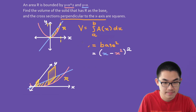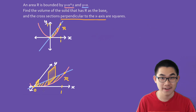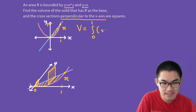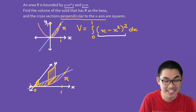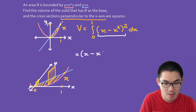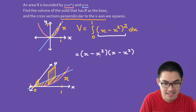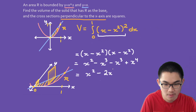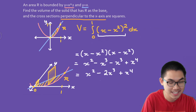We want the volume from 0 to 1, so V equals the integral from 0 to 1 of (x minus x squared) squared dx. Expanding by multiplying (x minus x squared) times (x minus x squared) gives x squared minus x cubed minus x cubed plus x to the fourth, which simplifies to x squared minus 2x cubed plus x to the fourth.